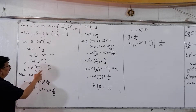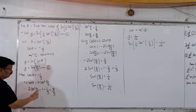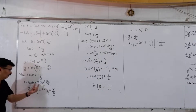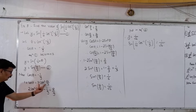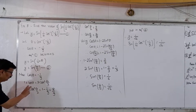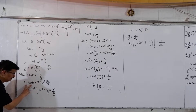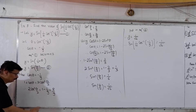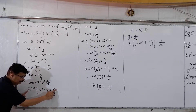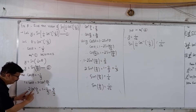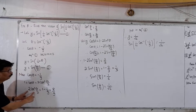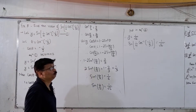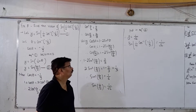Given cos θ = −1/9, we use the half-angle formula: 2cos²(θ/2) = 1 + cos θ. So 2cos²(θ/2) = 1 − 1/9 = 8/9, giving cos²(θ/2) = 4/9, and therefore cos(θ/2) = 2/3.